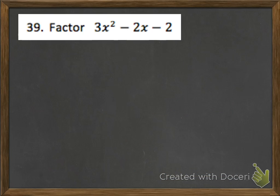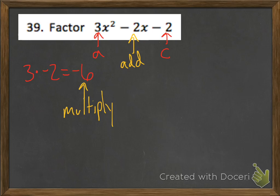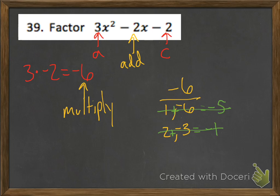Problem 39 wants us to factor 3x squared minus 2x minus 2. This is also a problem that is not factorable. Using the AC method, I multiply 3 times negative 2 to get negative 6. I need factors of negative 6 that add to negative 2. The factor pairs are 1 and 6, and 2 and 3 — with the larger number negative. But 1 plus negative 6 is negative 5, and 2 plus negative 3 is negative 1. None add to negative 2, so this problem is also not factorable.